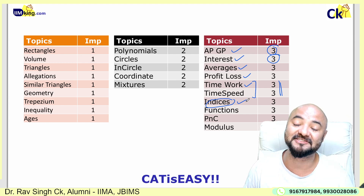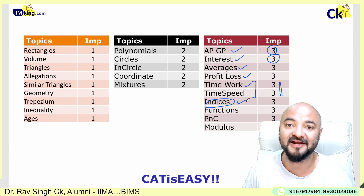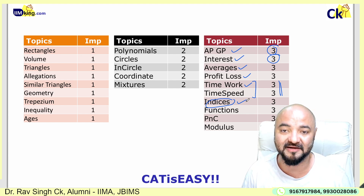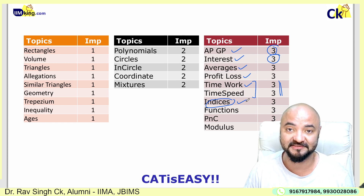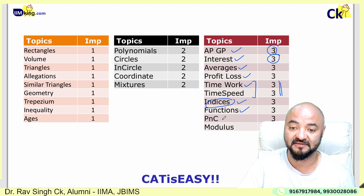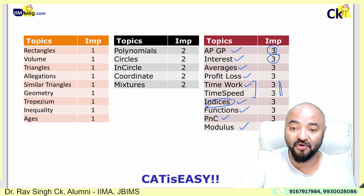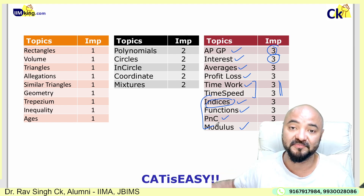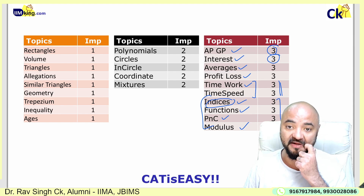Time speed distance and indices — do indices, it's like deciding whether to take account or not. There's one question every slot from indices. Functions and graphs — three questions. PnC — three questions. Modulus — three questions. So all these are new topics which are important from the exam point of view that I have to cover.